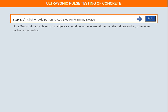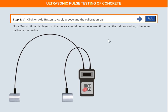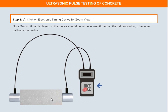Once we start the experiment, step one is to switch on the electronic timing device — please click here to add it. The electronic timing device is now shown. The next step is to apply the grease and then calibrate the bar. The given concrete specimen is placed here.